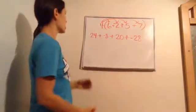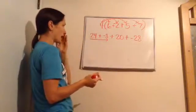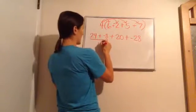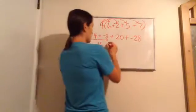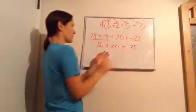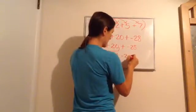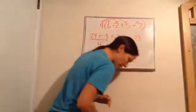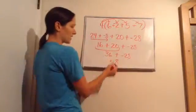Now I just go from left to right. 24 plus a negative 8 means I subtract, ending up with 16. Take the sign of the biggest number — positive. 16 plus 20 plus negative 28: 16 plus 20 is 36, and 36 plus negative 28 gives us 8 as our final answer. Yes, we are right. Final answer: 8.